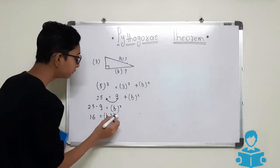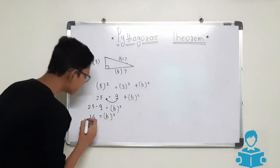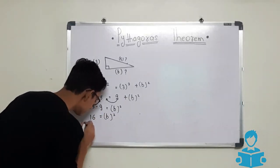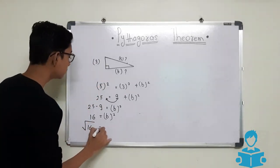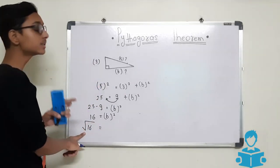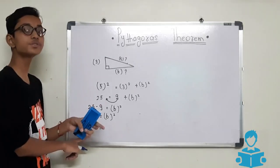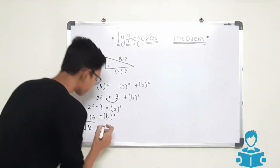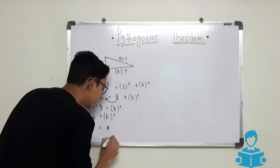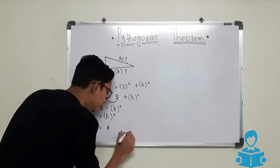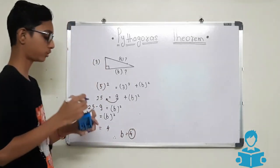For removing the square symbol, we will take the square root of 16. The square root of 16 is 4. Therefore, we get the value of B is 4.